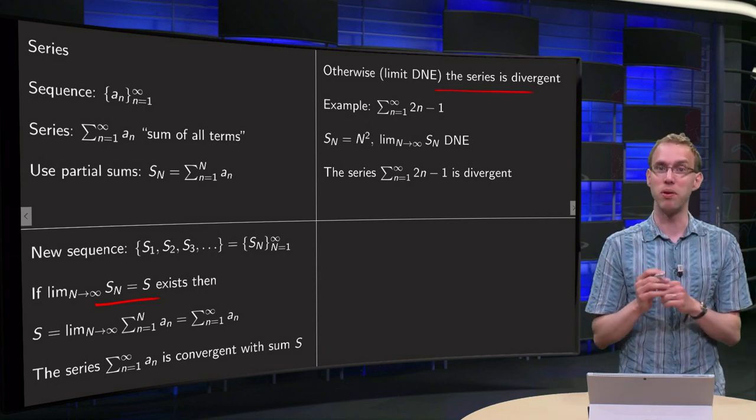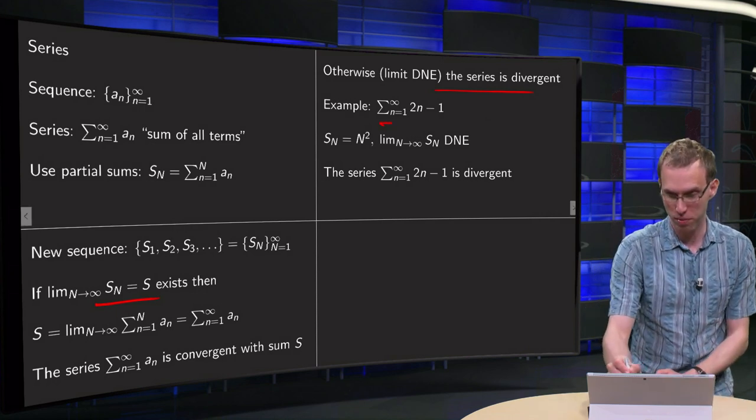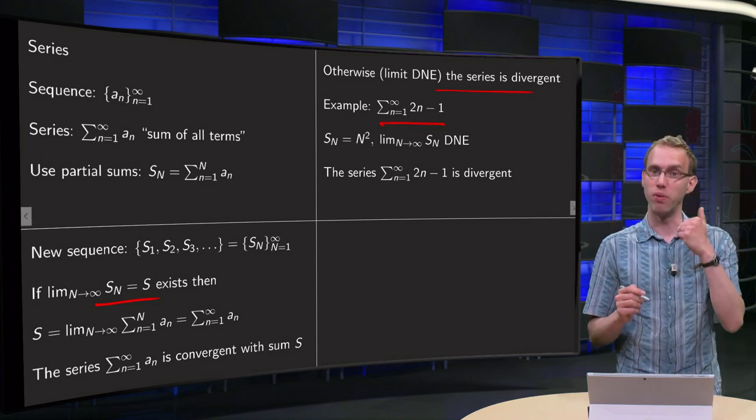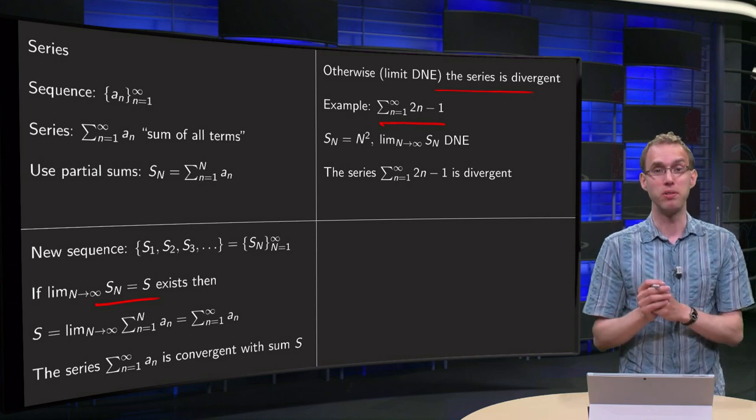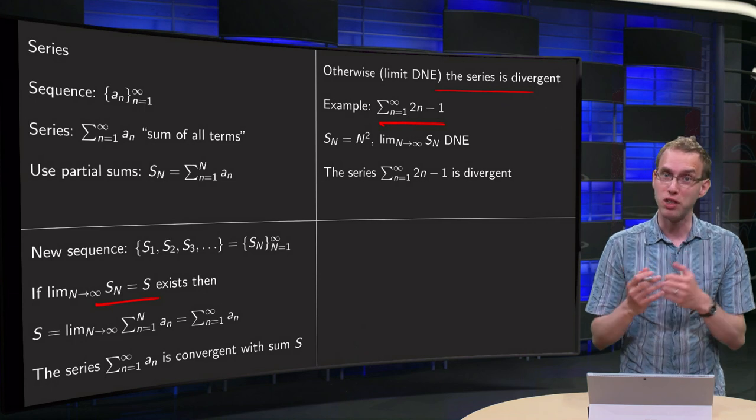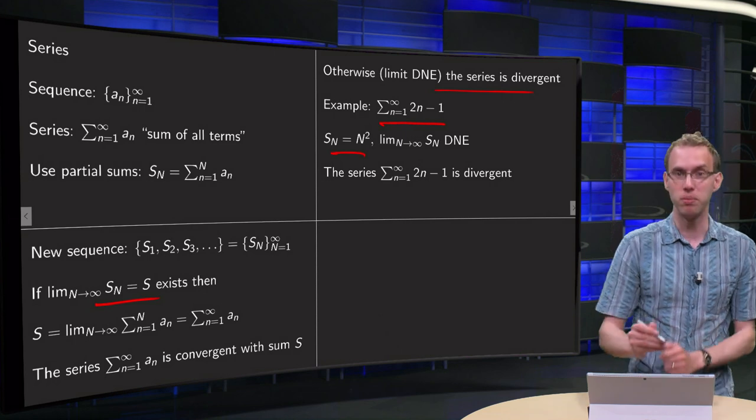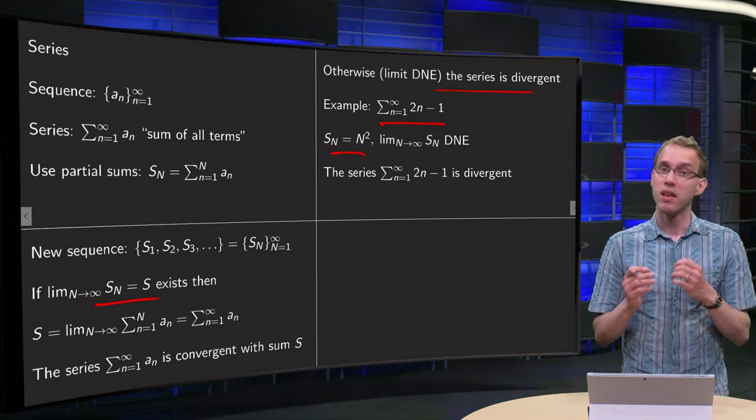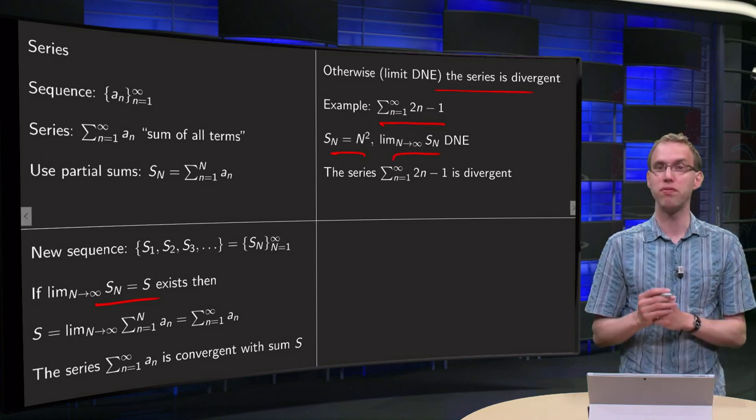So let's do an example. Let's try to add all odd numbers, so sum from n equals 1 to infinity of 2n minus 1, so 1 plus 3 plus 5 plus 7 plus 9, etc. First we have to compute the nth partial sum. Fortunately we are able to do that, we have done so in a previous video. The nth partial sum equals n squared.